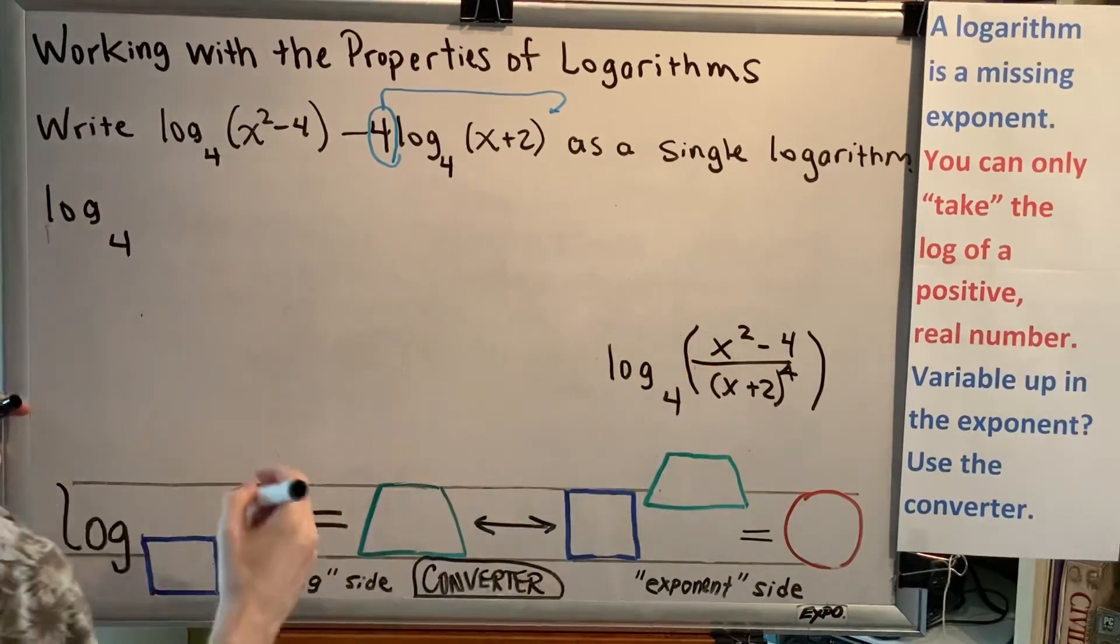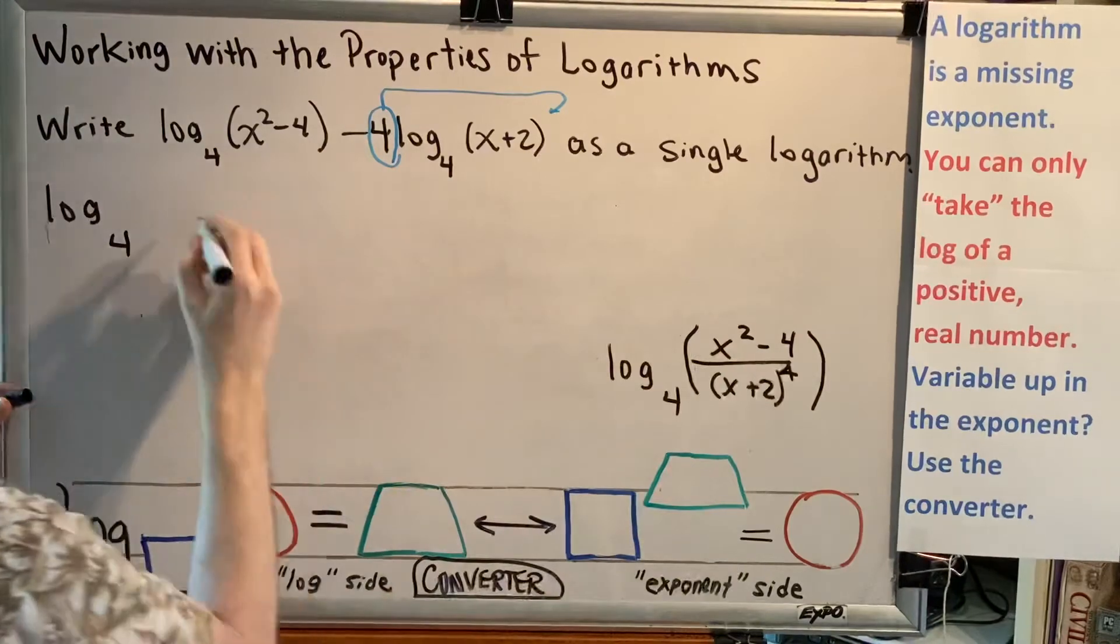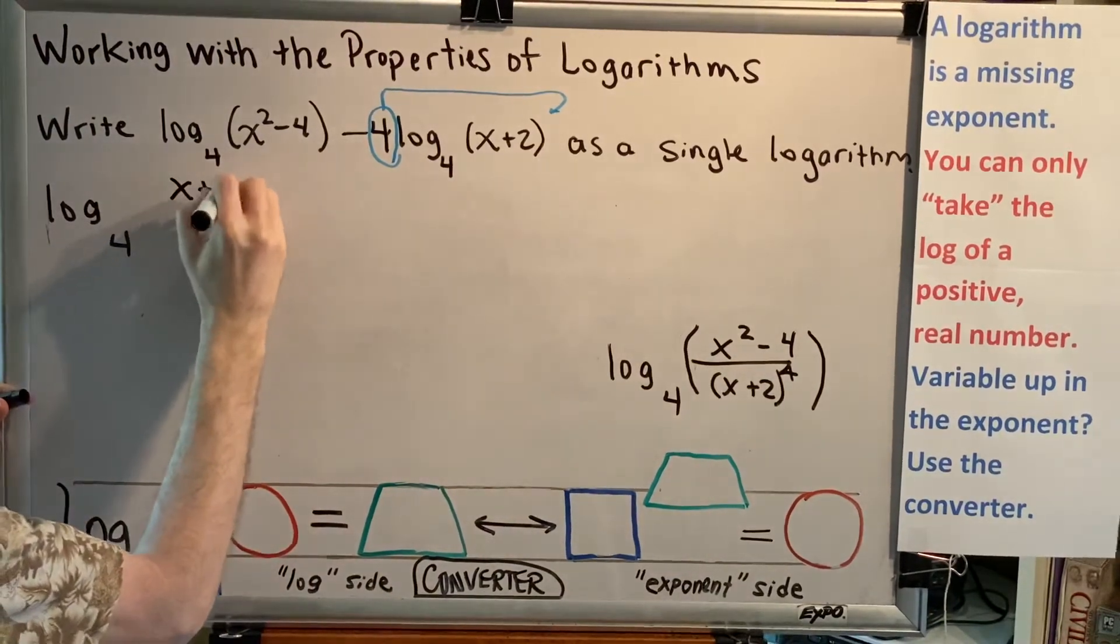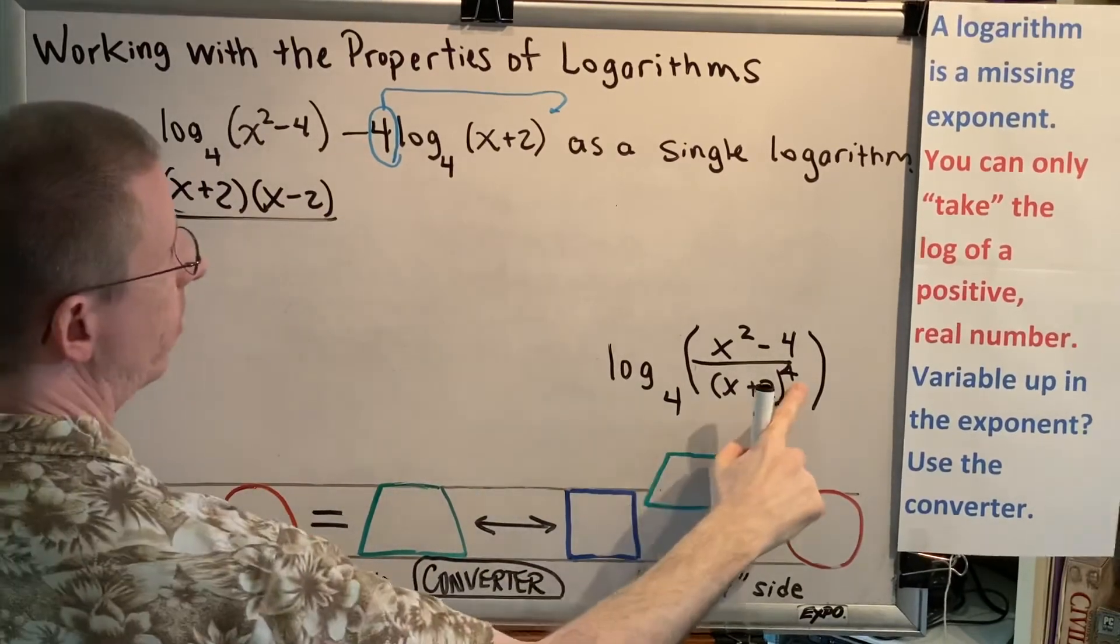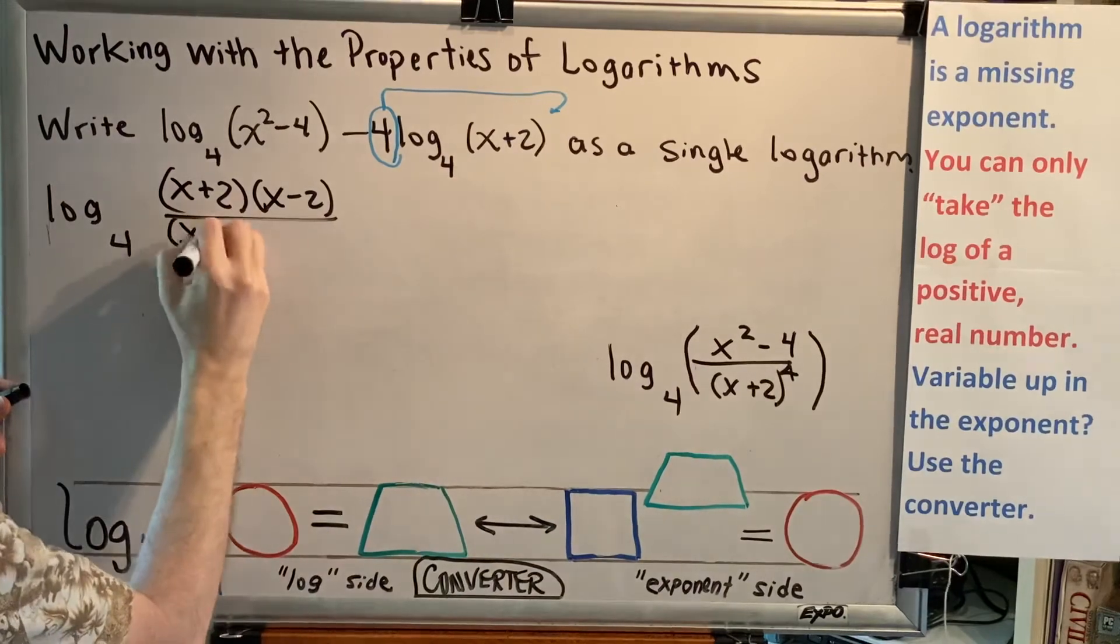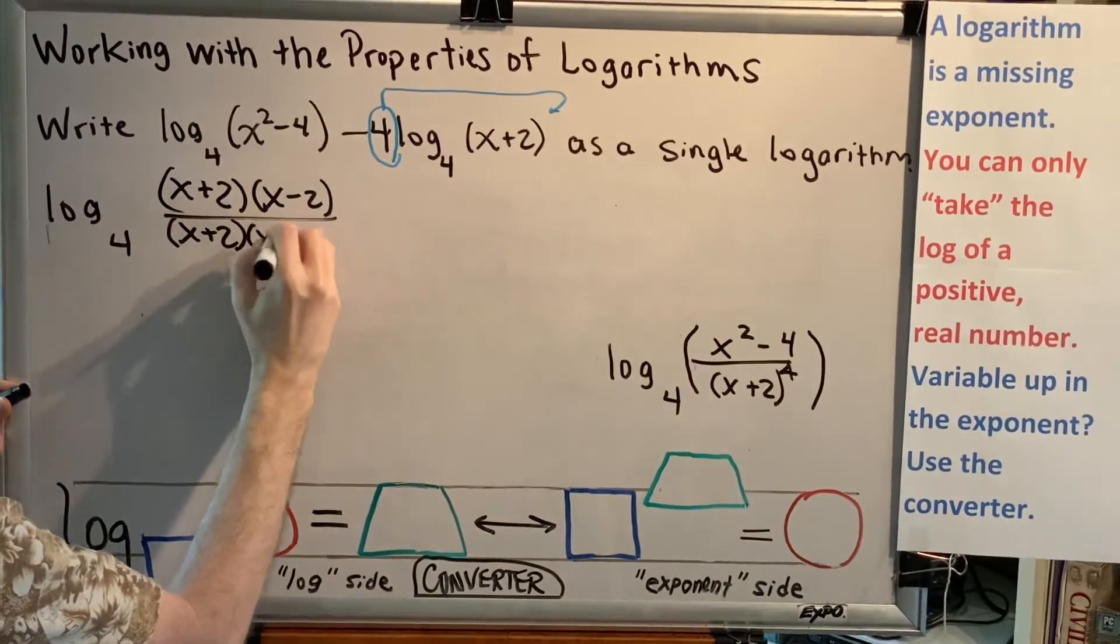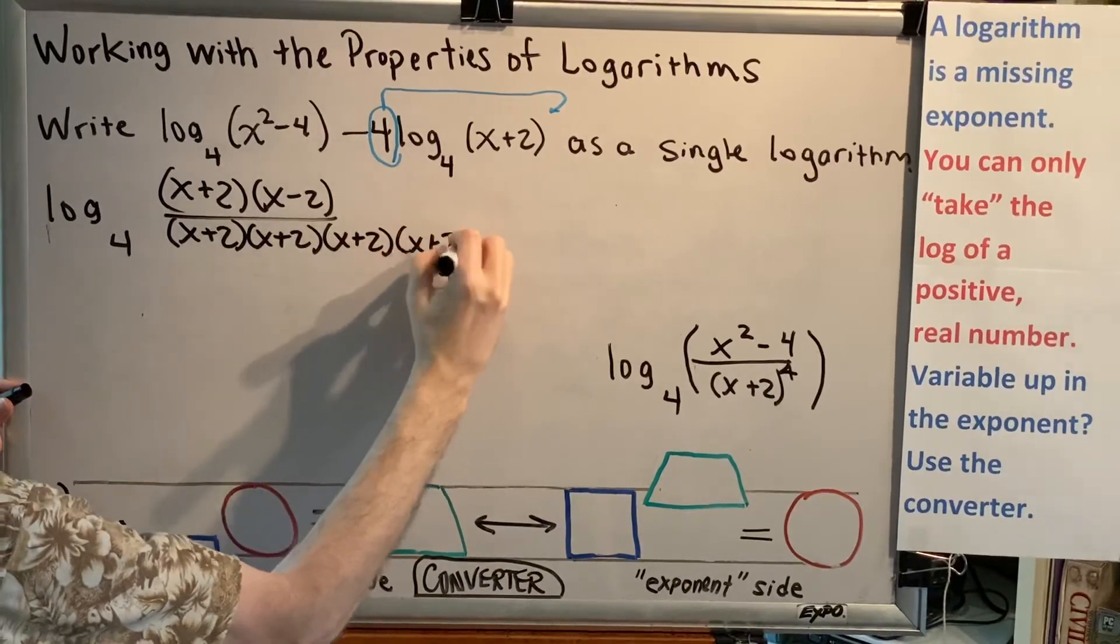This difference of squares, x squared minus 4, can be written as x plus 2 times x minus 2. And in our denominator, since an exponent tells me how many times to multiply a base by itself, I can write an x plus 2, a second x plus 2, a third x plus 2, and a fourth x plus 2.